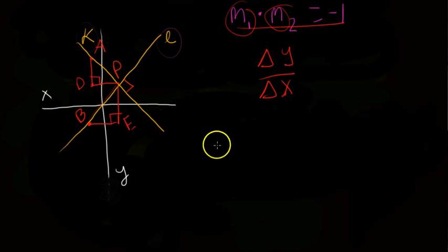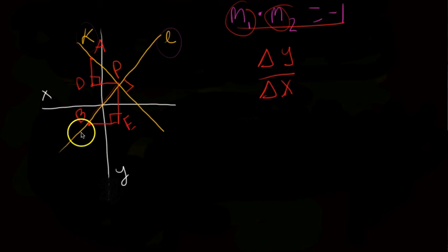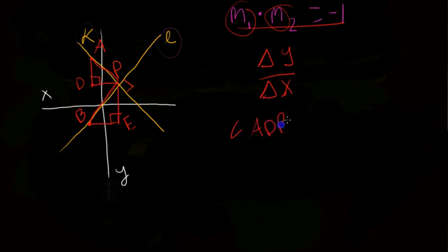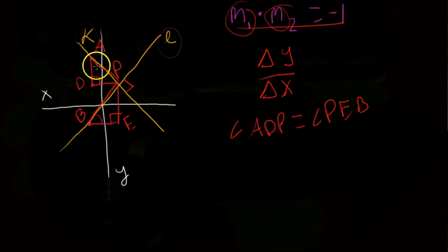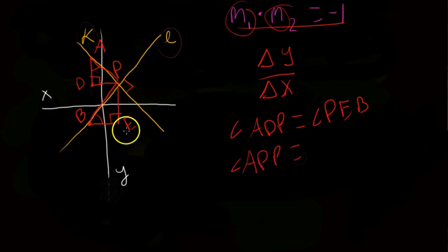The first thing we're going to want to do is prove these triangles similar. The best way to do that would be angle-angle similarity. Angle ADP is obviously equal to angle PEB — they're both 90 degrees, they're right triangles. Now we're going to want to find another angle. I think we'll be able to prove that angle APD is equal to angle BPE.